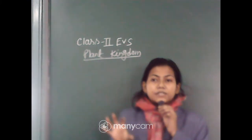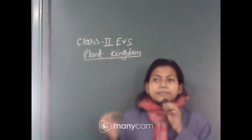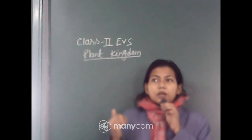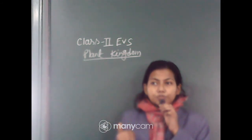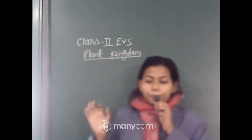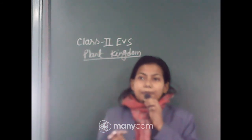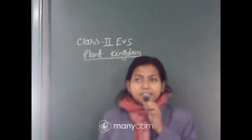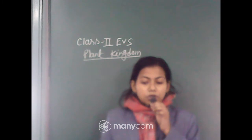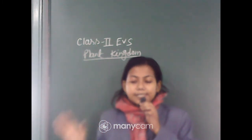We see different plants around us and we have already known that plants are very important in our life — they are very useful and friendly. We see different kinds of plants around us. Some plants are tall, some plants are short, some are bushy in structure, and some grow along the ground.